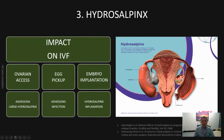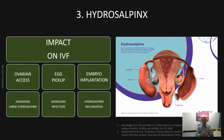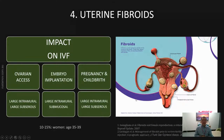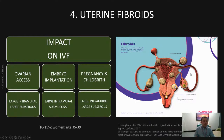Large hydrosalpinx may also reduce access to the ovary, making it difficult to see the ovary on ultrasound scan or during egg pickup. The next pathology is uterine fibroids. Unfortunately, uterine fibroids are fairly common — 10 to 15% of women have uterine fibroids between the ages of 35 to 39. There are three different types. The first is subserosal fibroids, which have very minimal impact on fertility and IVF treatment.